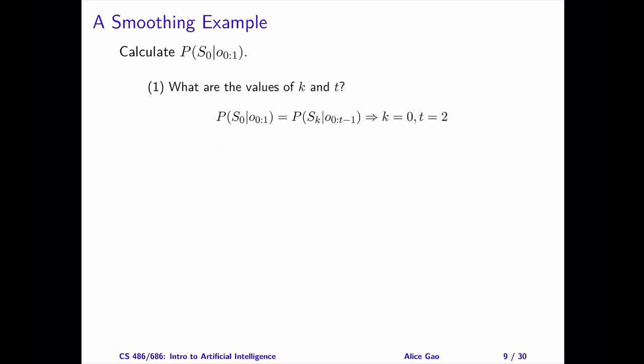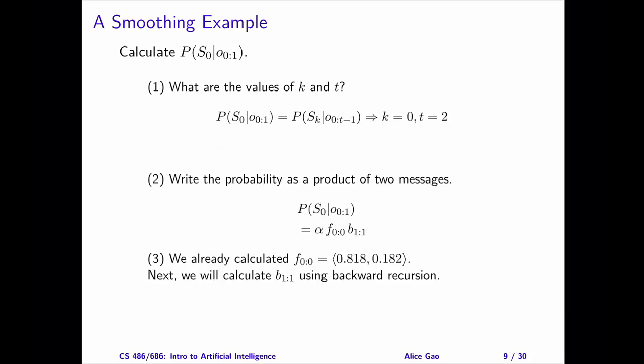Next, let's write the probability as a normalized product of two messages. The first one is F sub 0 to 0, the probability of the state on day 0 given an observation on day 0.